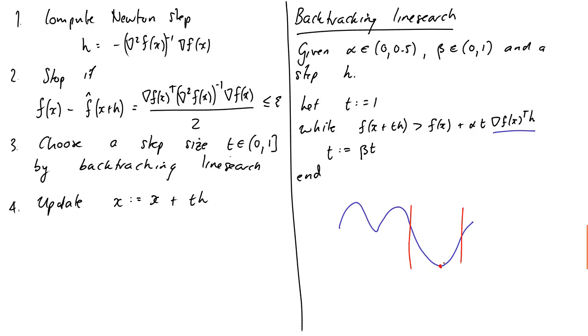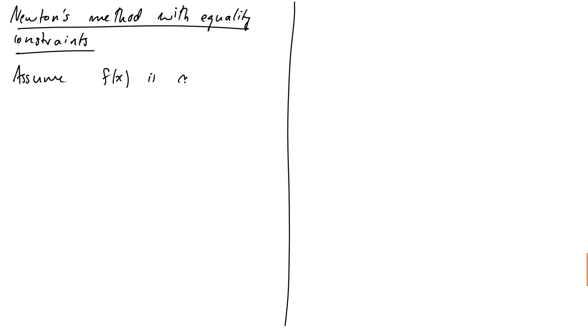Right. What if we don't have an unconstrained problem? What if we've got equality constraints? So let's try that next. Whoops. So now we're making our problem a bit harder. So again, we'll assume F of X is convex. Our problem is minimise over X, F of X, subject to now a set of equality linear equality or affine equality constraints AX equals B.